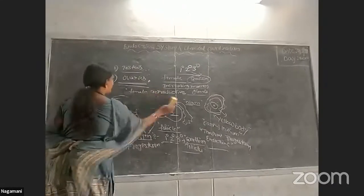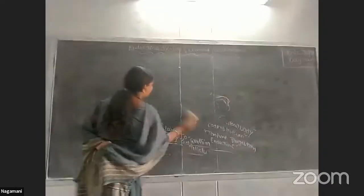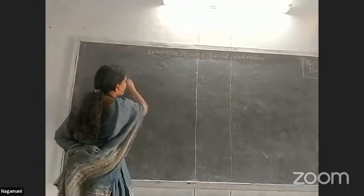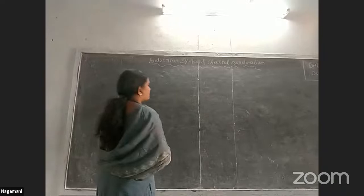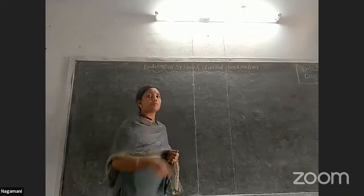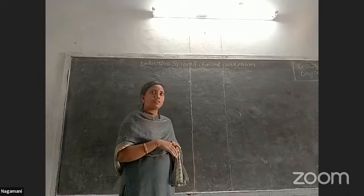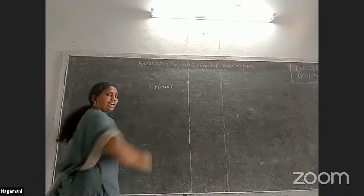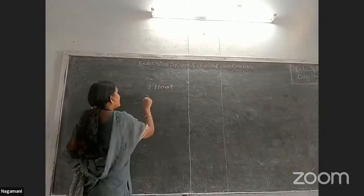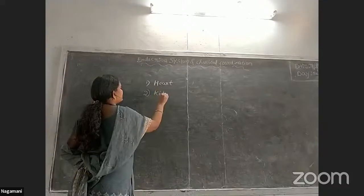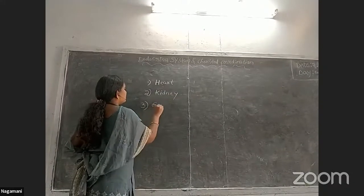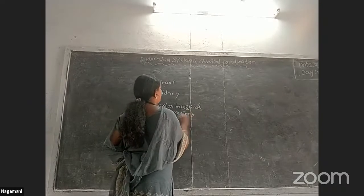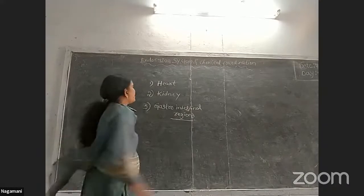We have now completed endocrine glands and their secretions and disorders. In the human body, not only endocrine glands but also some other organs secrete hormones. The first is the heart.